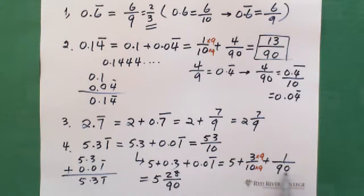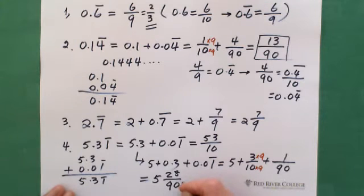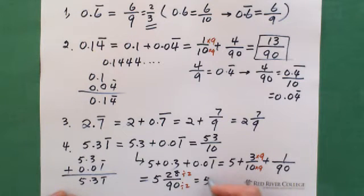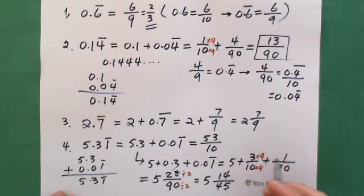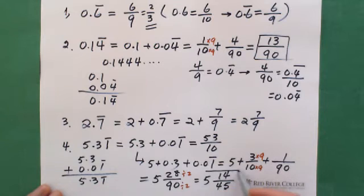Now simplify 28 over 90. Since 28 is even and 90 is even, divide both by 2: you get 14 over 45. So the answer is 5 and 14 over 45. Check if it simplifies further: 45 is only divisible by 5, but 14 is not divisible by 5, so 14 over 45 is fully simplified. That's the final answer.